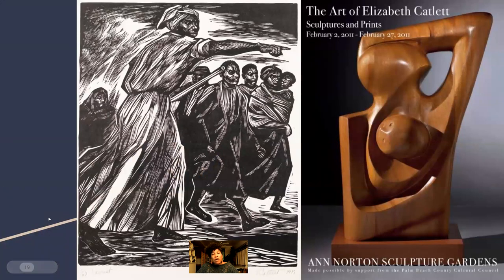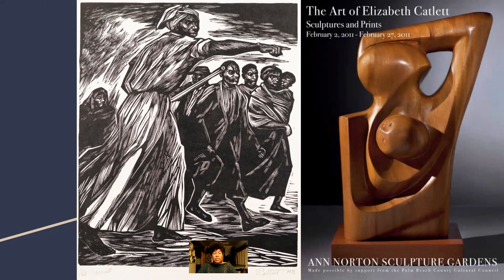Elizabeth Catlett is another artist brought up in the essay. She was one of the first Black American women to have some notoriety as an artist in the United States, around the 40s and 50s. She was also sympathetic to the communist movement, as many African American activists and artists were, because they saw a deep connection between class oppression and race oppression — looking to the communist movement as a way to combat both and transform American society for equality.